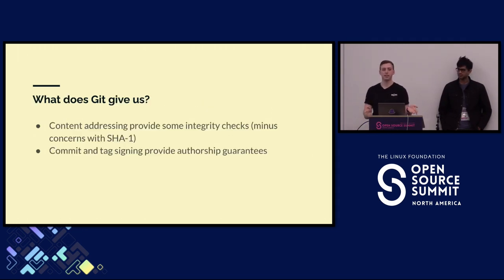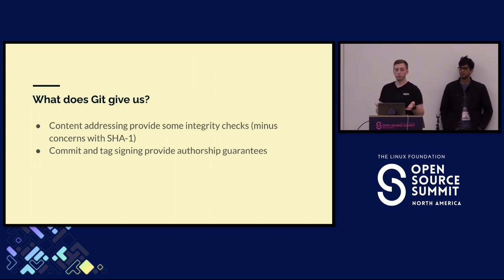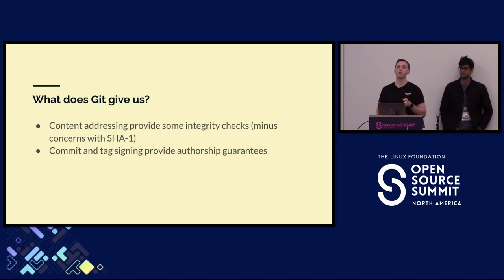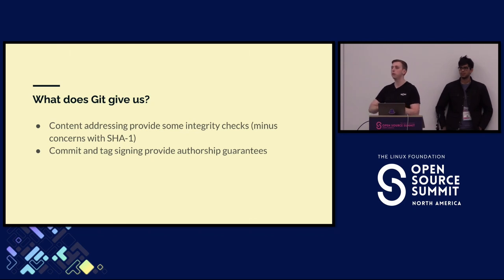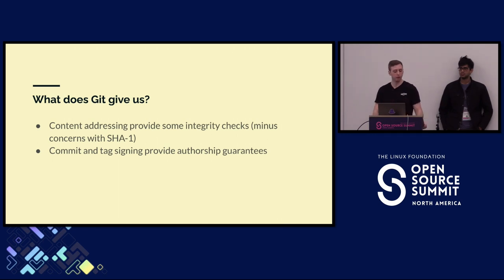So what does Git give us today? Git is fairly simple. We have SHA1 checksums for all objects — blobs, trees (which are basically folders), commit objects, and tag objects. So we do have some amount of integrity checks. If someone modifies the history, we can see that the checksum changed. We can ensure we're looking at the same point. We're not going to go into SHA1 versus SHA256 debates here, but it is something to keep in mind.